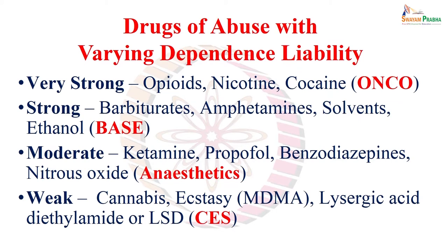Regarding dependence liability, different drugs of abuse have varying dependence liability. Those with very strong dependence liability include opioids, nicotine, and cocaine. Those with strong but not the strongest include barbiturates, amphetamines, solvents, and ethanol or alcohol. Those with moderate dependence liability include ketamine, propofol, benzodiazepines, and nitrous oxide. Those with weak dependence liability include cannabis, MDMA (ecstasy/STAC), and lysergic acid diethylamide (LSD).